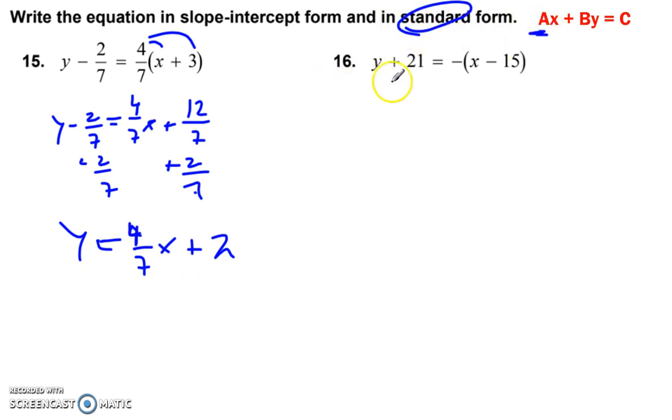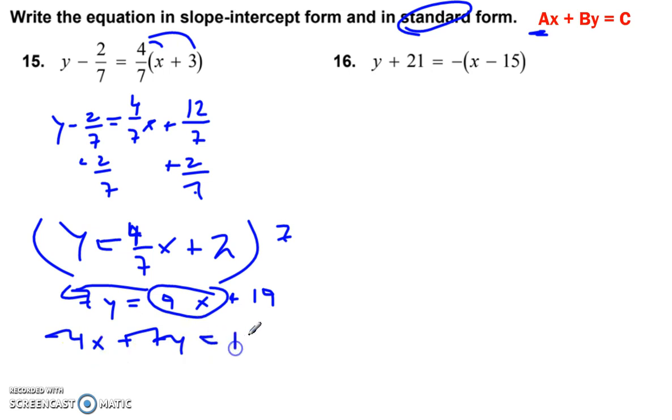Now we want it in standard form. We need the first term to be positive and all integers. So we're going to multiply the whole thing by the denominator by 7. Okay. So then we have 7y is equal to 4x plus 14. And then move the 4x to the other side. And we get negative 4x plus 7y is equal to 19. Change all the signs. 4x minus 7y is equal to 19.